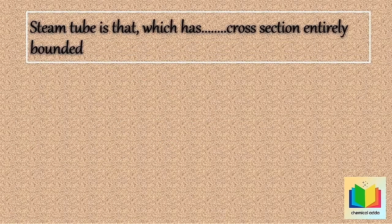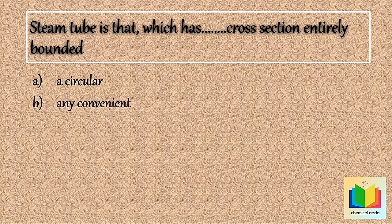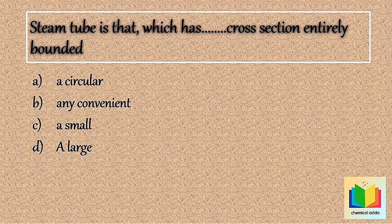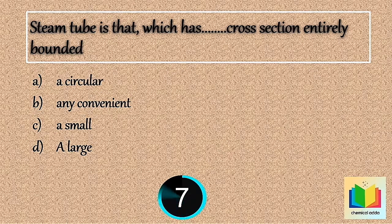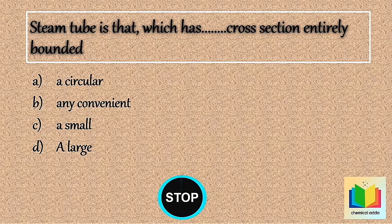Next question: A stream tube is one which has a cross section entirely bounded by streamlines. Options are — Option A: a circular cross section. Option B: any convenient cross section. Option C: a small cross section. Option D: a large cross section. Your time starts now... Stop. The answer is Option B: any convenient cross section.